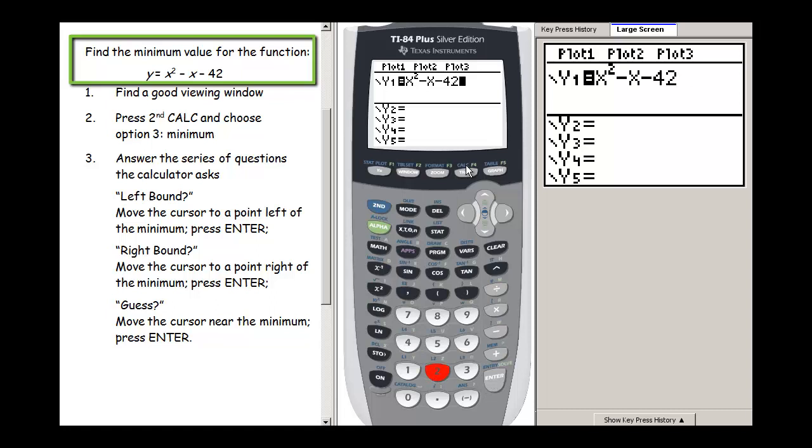So to decide on a window, my options are I could use one of my presets, I could set my window manually, or I could have the calculator build a window for me. Let's remind ourselves what this function basically looks like.